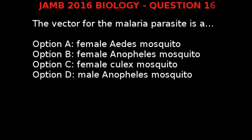JAM 2016 Biology question 16. The vector for the malaria parasite is: option A, female Aedes mosquito; option B, female Anopheles mosquito.